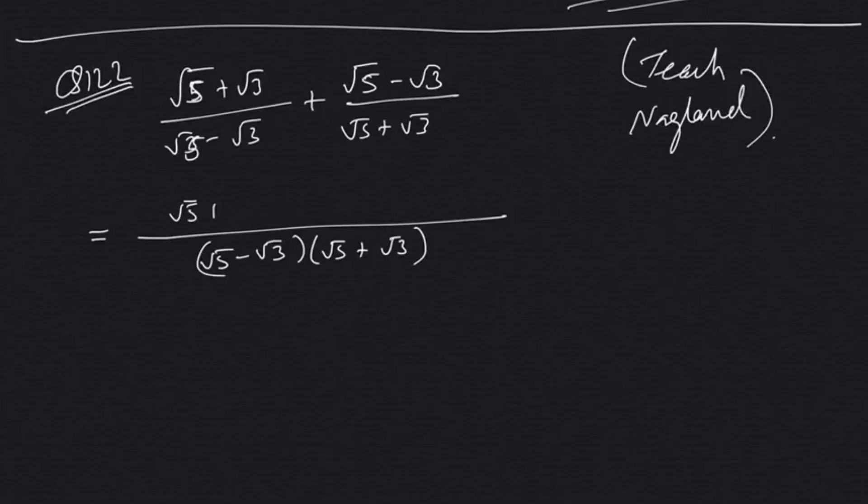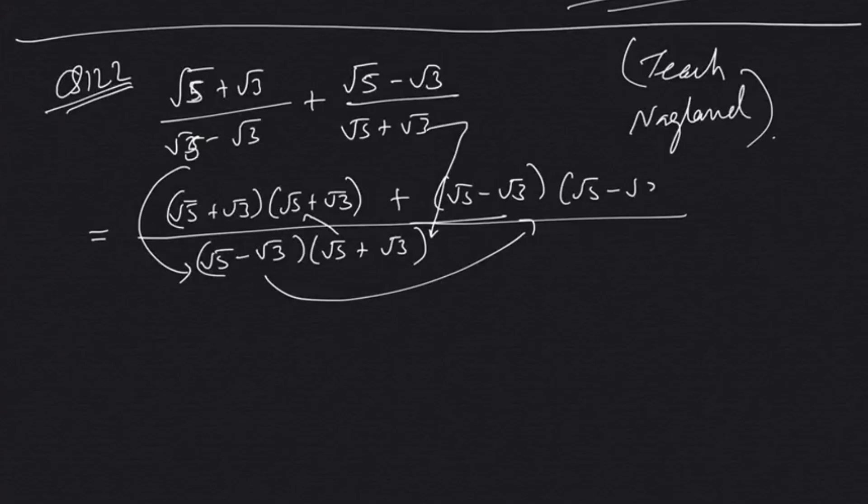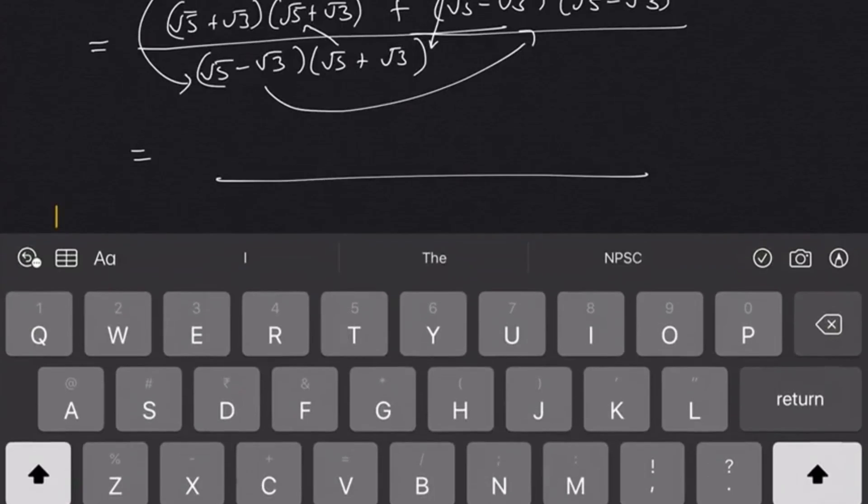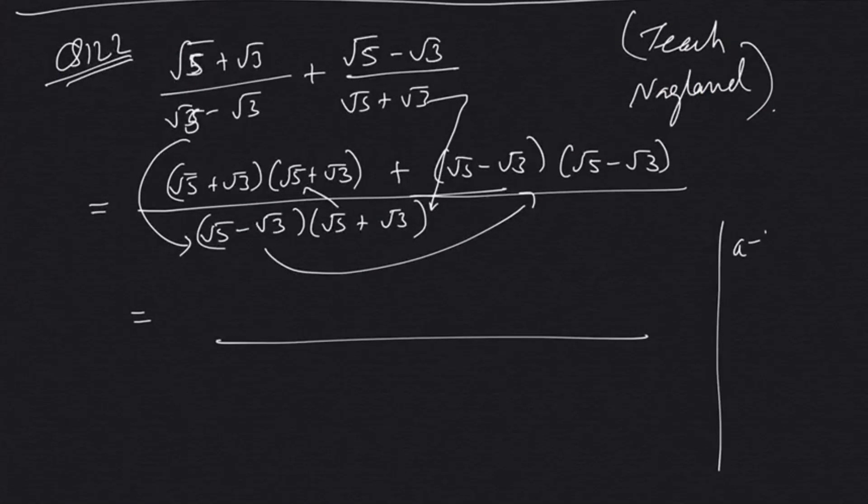You can just take the LCM, that is (√5 - √3)(√5 + √3). LCM now is going to be (√5 + √3). This is already there, so it will get multiplied by (√5 + √3). Plus, it is √5 - √3, this term is already here, so it will get multiplied by (√5 - √3). There are some formulas - A minus B into A plus B, the formula is A² - B². Denominator, you can see the terms are all same, so this we can write as A² - B².